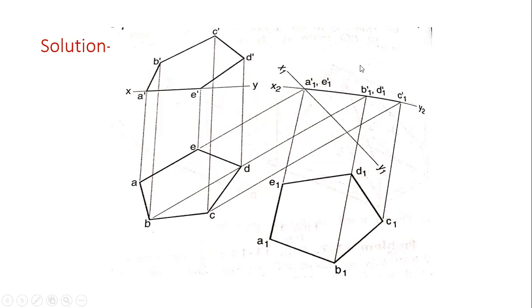Now joining all the corners a1 dash, b1 dash, c1 dash, d1 dash, and e1 dash with the help of straight line using HB pencil. This is shown in that figure. Now we will draw another reference line.